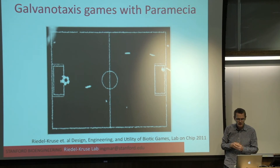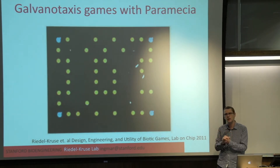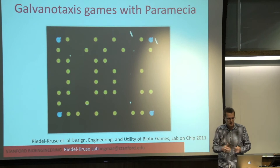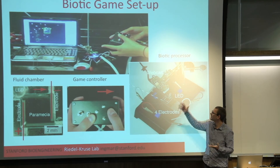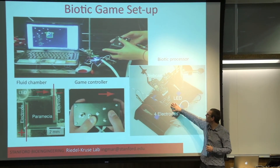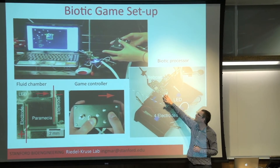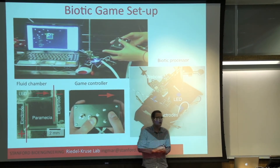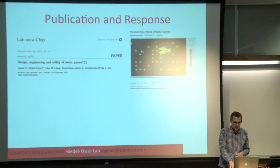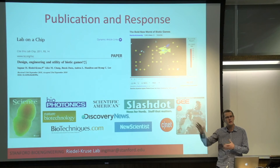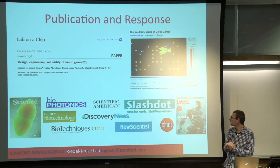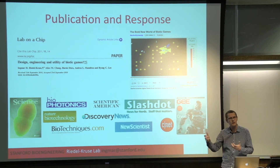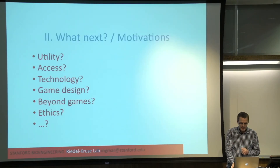You can apply electric fields, and these organisms have a natural response called galvanotaxis — they swim with the field lines. You can control these field lines with a simple controller, bring this in real time onto a video screen, program some virtual objects on top, and make a game. The goal of this game is to get the organisms swimming through a box and score points by lighting up dots. So this is simultaneously an interactive experiment and a playful game. We published this and got good responses in both the scientific and game literature — broad appeal.